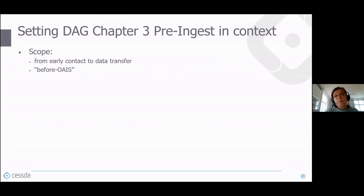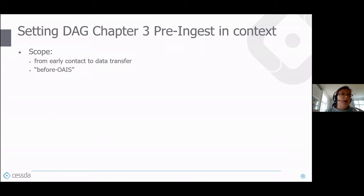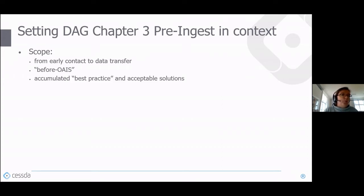The OAIS model usually starts with something called ingest, so pre-ingest is everything that happens before. It can be viewed broadly — everything from initial contact with the researcher or data provider to data transfer — or more narrowly, as just some actions you do before ingesting data into the system. Importantly, this chapter focuses on accumulated best practice and acceptable solutions, not theoretical prescriptions. It's not a 'must' — it's principles you should follow and solutions you could use.